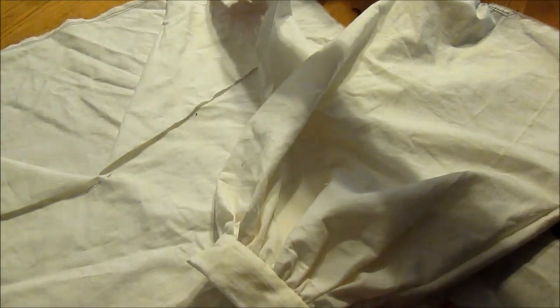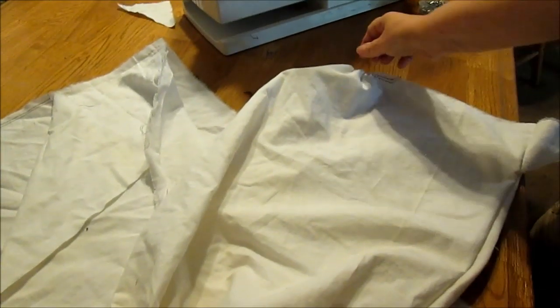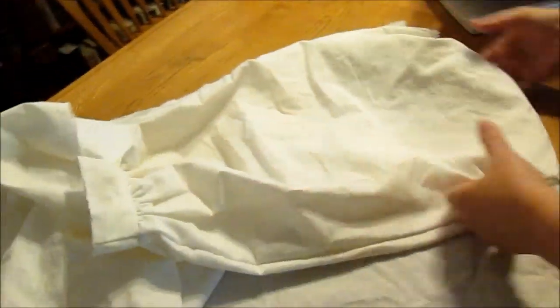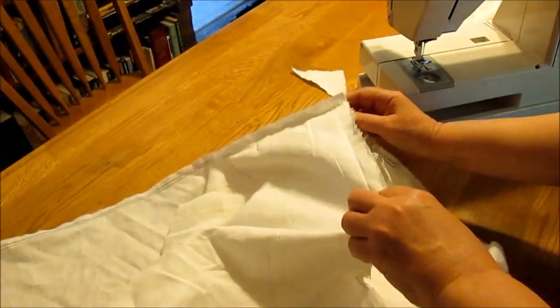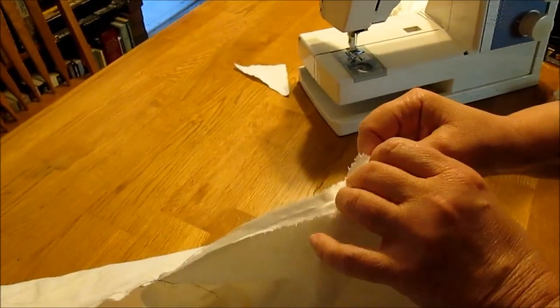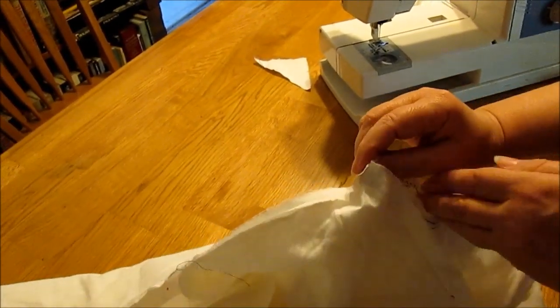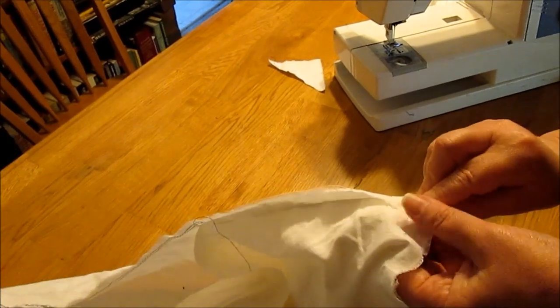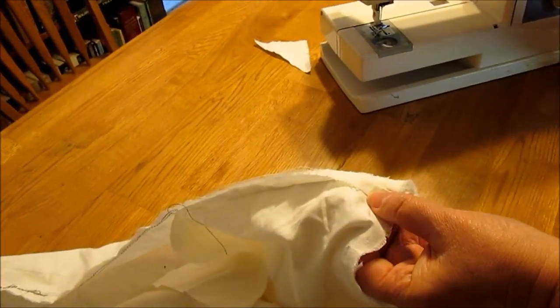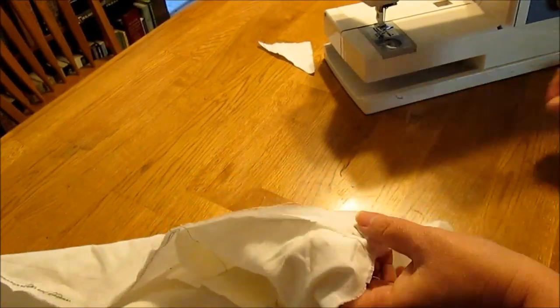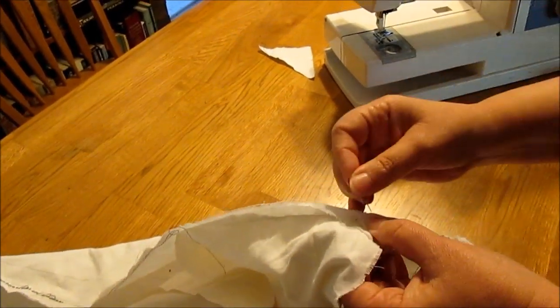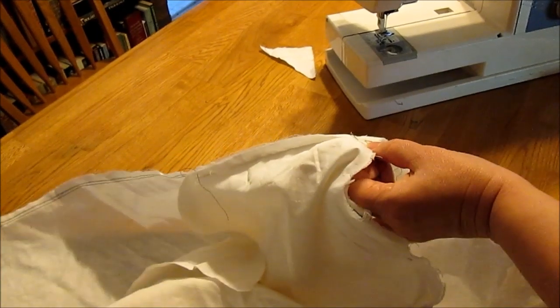Now we're going to take the inside out shirt and the right side out sleeve. We're going to put them together. There's the top of the sleeve. I'm going to start pinning this in place. This may seem a little counterintuitive until you realize that if you were to pull the sleeve inside out now, out through this hole, it would all be inside out.